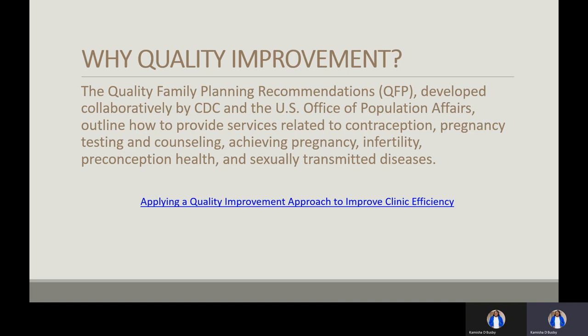The recommendations encourage the use of family planning visits to provide other essential preventive health services such as breast and cervical screenings. They also include a special section on serving the unique needs of adolescents. As an example, when patients expressed frustration about long wait times, a team at Haven Health Clinics in Amarillo, Texas used a quality improvement approach to improve clinic efficiency.